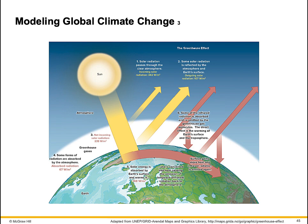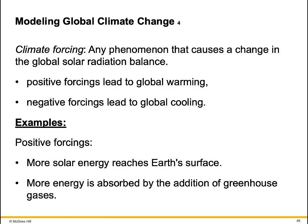Earth's radiation balance: one-third of incoming solar radiation is reflected, and the rest is absorbed by the atmosphere and the land and water of Earth's surface. The infrared is absorbed and re-emitted toward Earth's surface by greenhouse gases. Approximately one-third of incoming solar radiation is reflected back into space. The infrared from the heated surface is trapped by greenhouse gases, adding more warmth to our atmosphere. An increase in greenhouse gases adds 2 to 3 watts per square meter of additional warming to the atmosphere. Climate forcing is any phenomenon that causes a change in the global solar radiation balance.